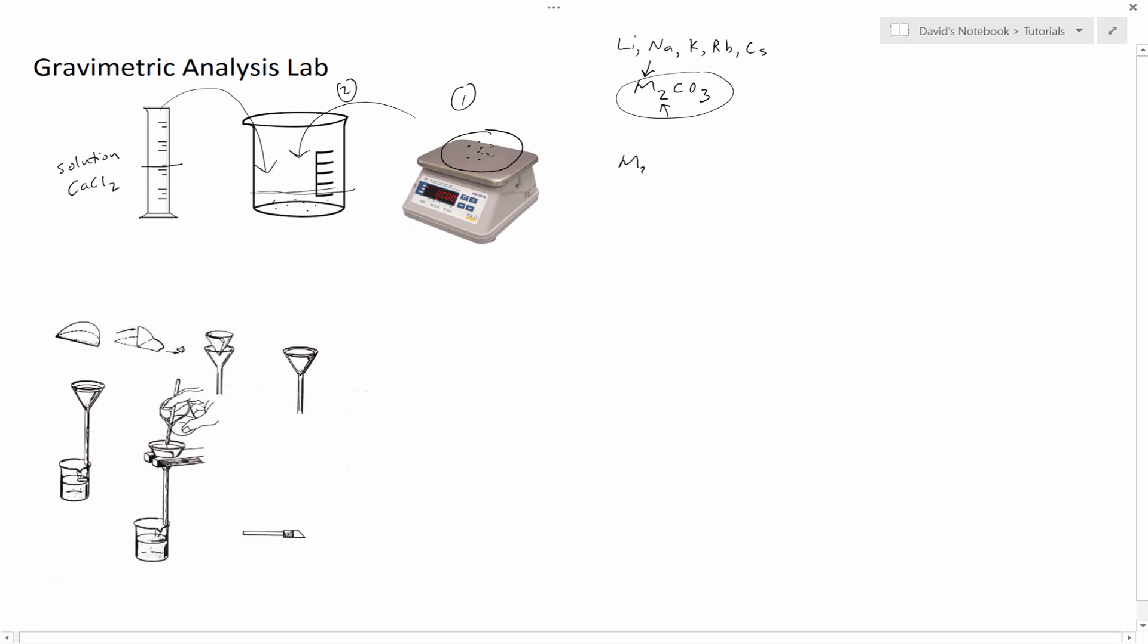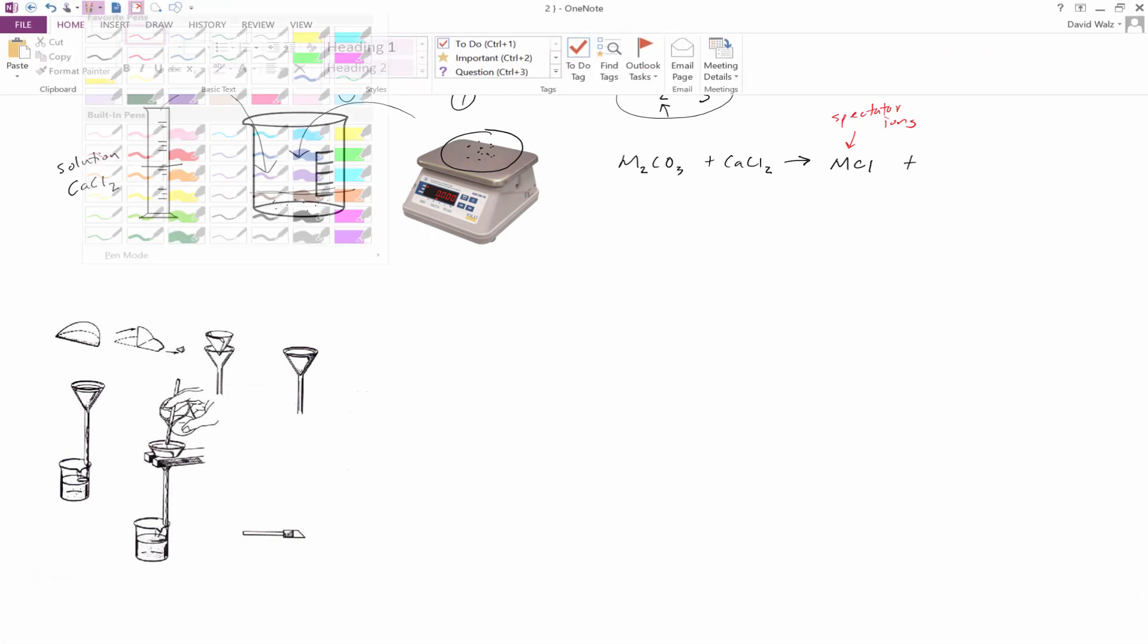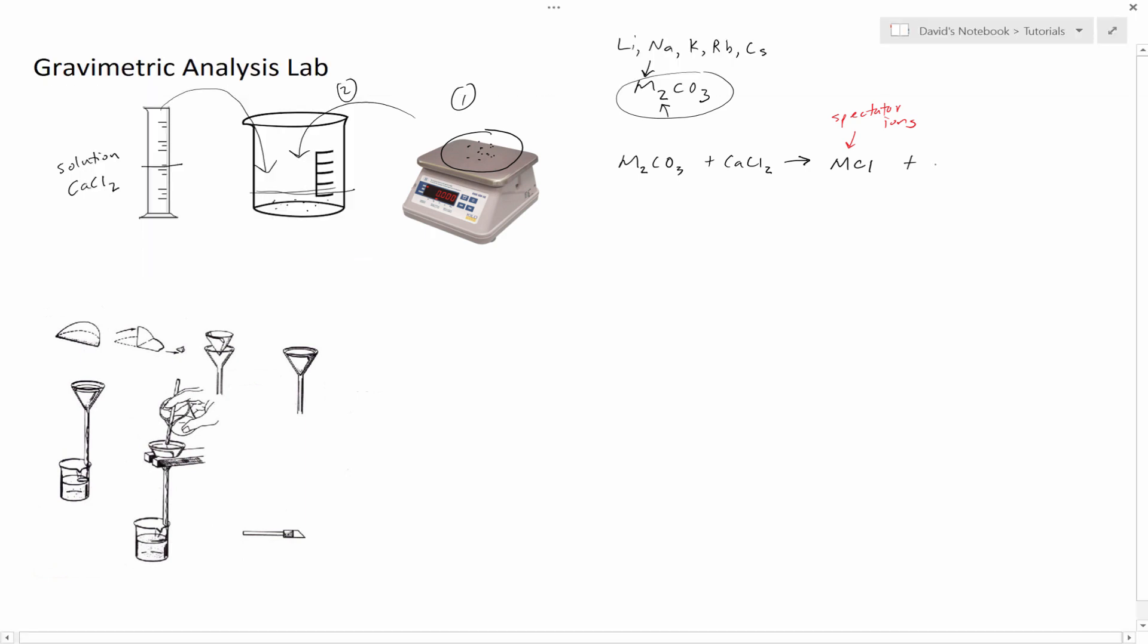We're going to get a precipitation reaction. We're going to get M2CO3 plus calcium chloride, which makes MCl. MCl is actually going to be our spectator ions. And then we get calcium carbonate, and this is our precipitate.